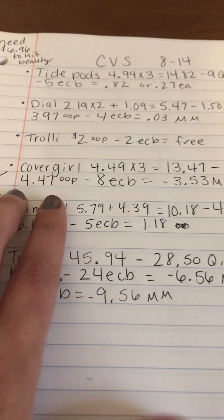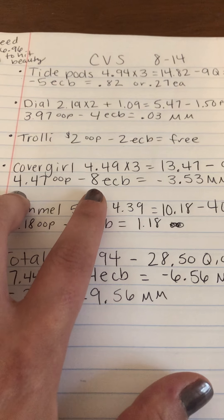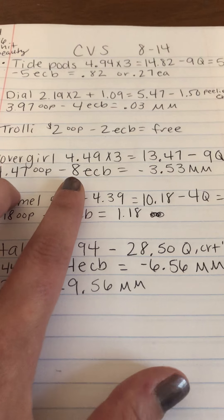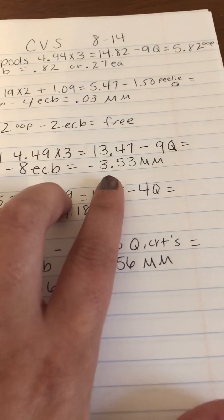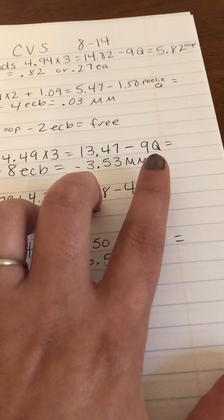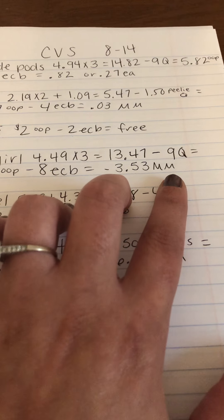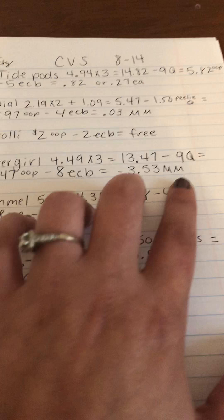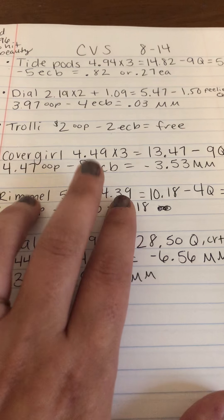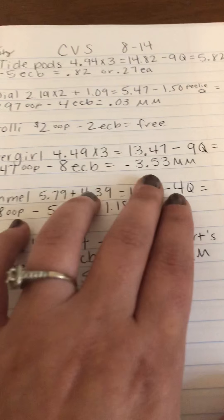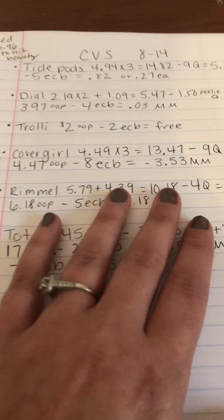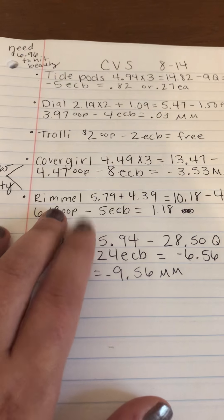The Cover Girl. I grabbed three of the brow pencils for $4.49, so that equaled $13.47. I used three of the $3 coupon, so $9 in coupons. I paid $4.47 and got back an $8 extra buck, making it a $3.53 money maker for that. So that was a great deal.